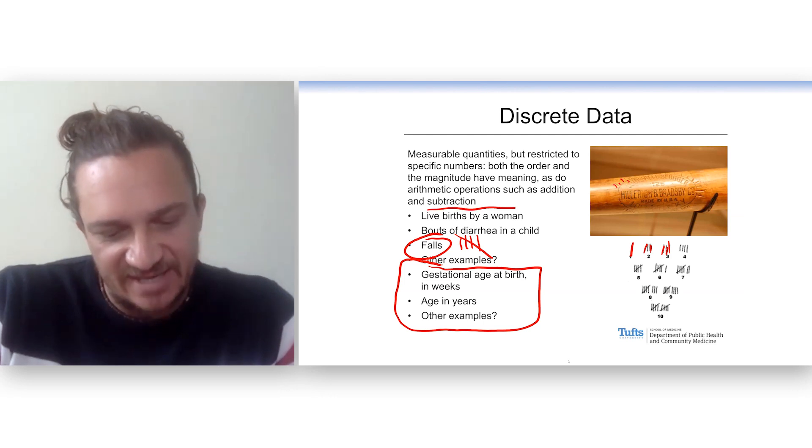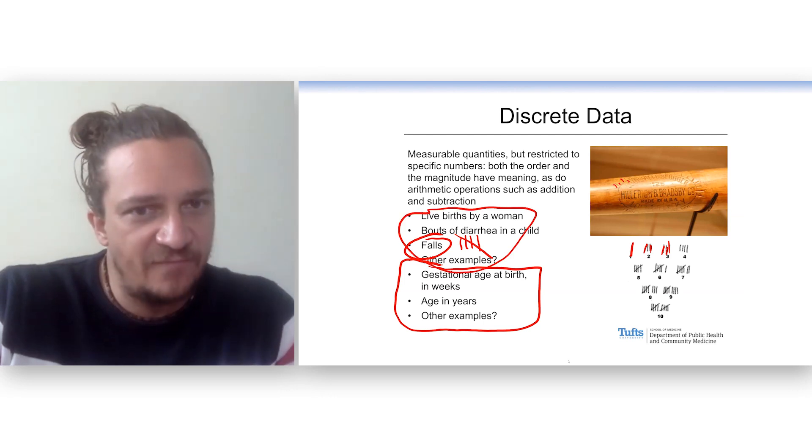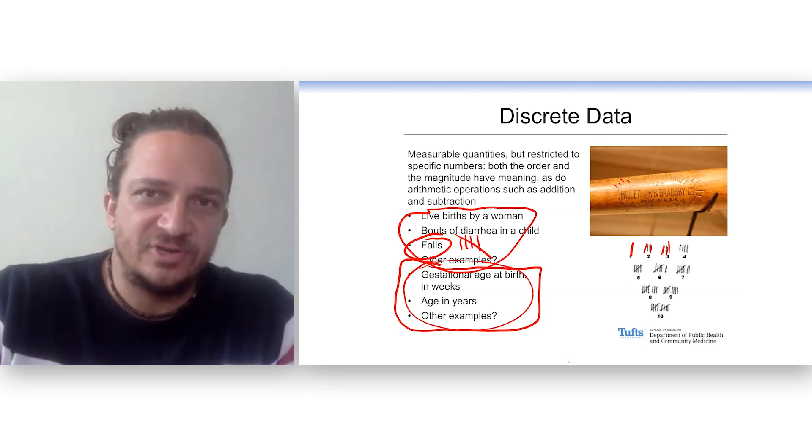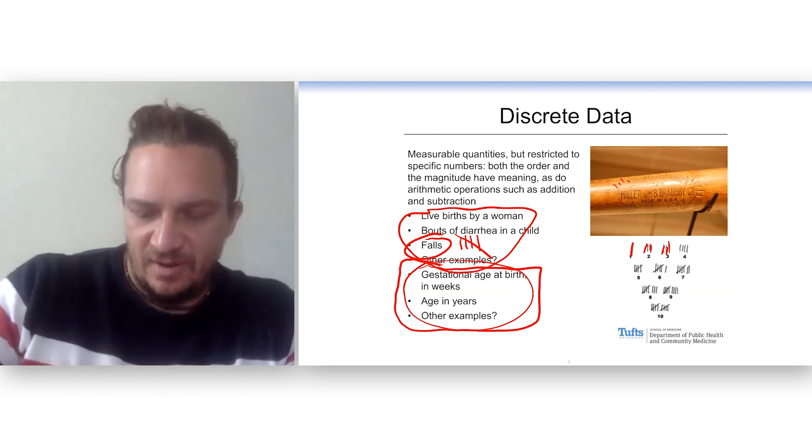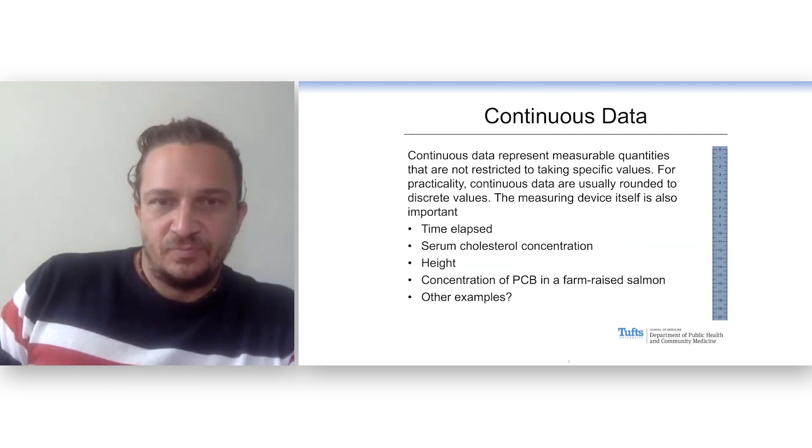So we see that these top things, again, defined by the variable itself. And then the bottom things will be defined by the researchers. What do we make those categories? So discrete variables.